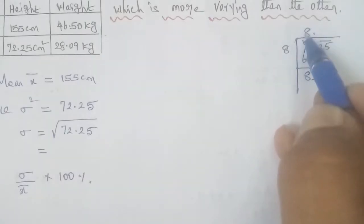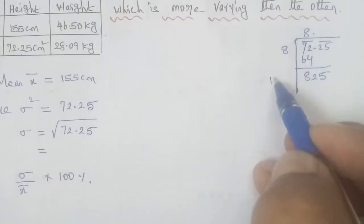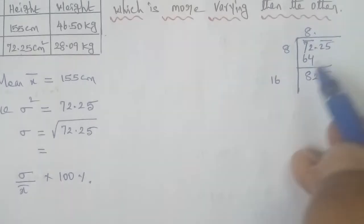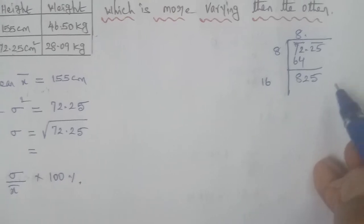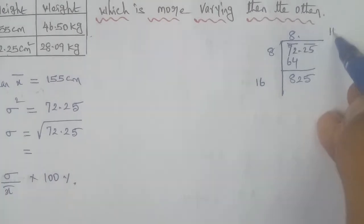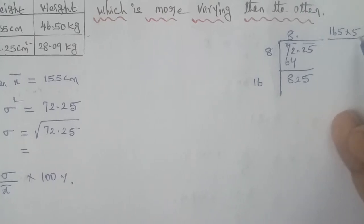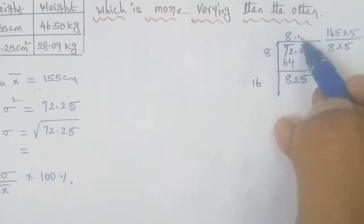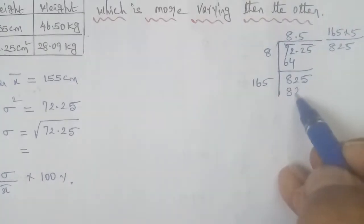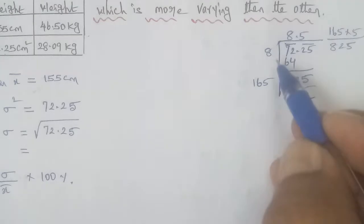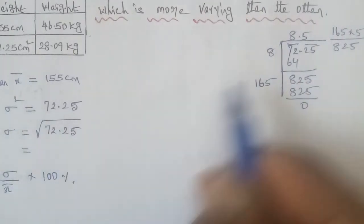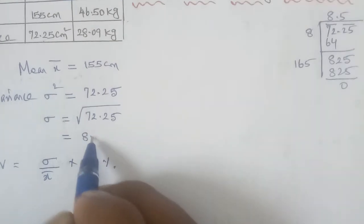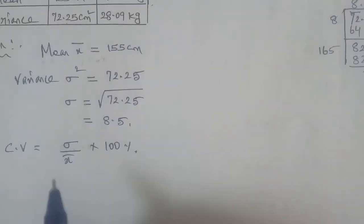So 72.25, if you apply square root, two numbers multiply to get the nearest power number. 64 is 8 squared, 16 times 2 equals 32. 825 divided by 5 gives answer 165. 8.25, so the answer is 8.25. If the square root is applied to 72.25, it gives 8.5. So sigma answer is 8.5.